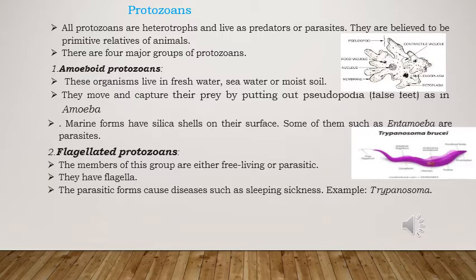The first one is amoeboid protozoans. These organisms can live in fresh water, sea water, and moist soil. They show the formation of false feet known as pseudopodia. For example, amoeba moves and captures prey by pseudopodia. If they are marine in nature, they have a silica shell on their surface. Some of these are parasitic — for example, Entamoeba, which causes disease.